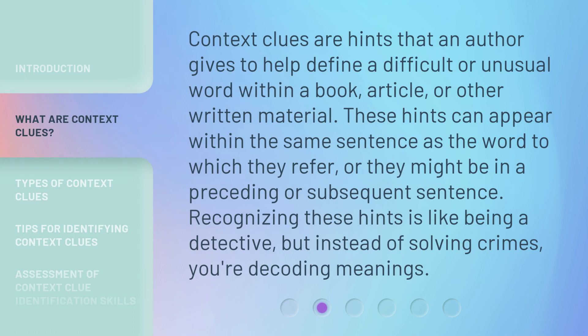Context clues are hints that an author gives to help define a difficult or unusual word within a book, article, or other written material. These hints can appear within the same sentence as the word to which they refer, or they might be in a preceding or subsequent sentence. Recognizing these hints is like being a detective, but instead of solving crimes, you're decoding meanings.